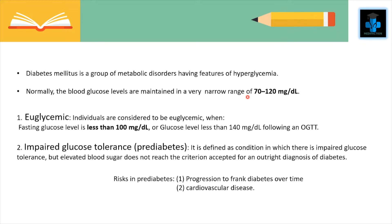The prevalence of diabetes is increasing sharply in the developing countries because of more sedentary lifestyle. The American Diabetes Association has formed various definitions. The first one is euglycemic, which means individuals are considered to be euglycemic when the fasting glucose level is less than 100 mg per dL or glucose level less than 140 milligrams per deciliter following an OGTT.